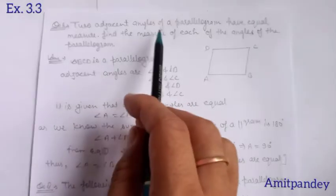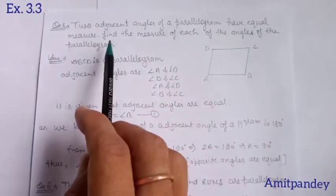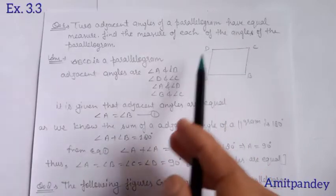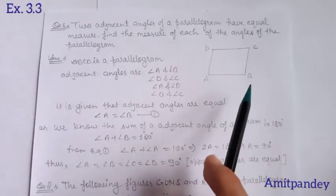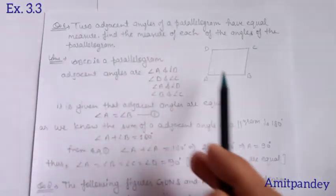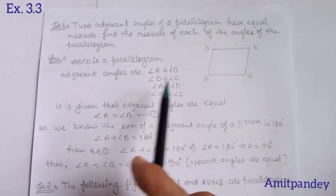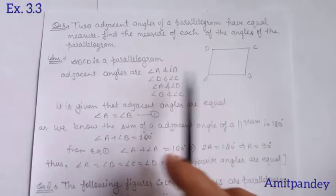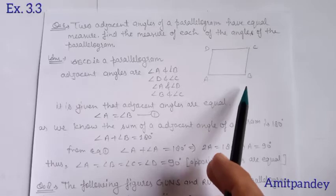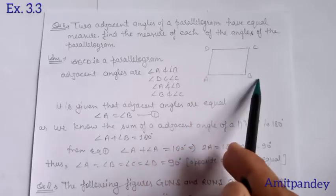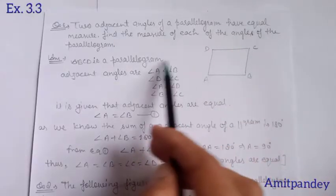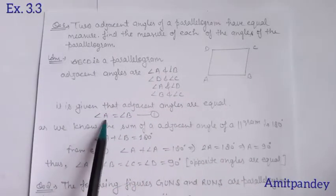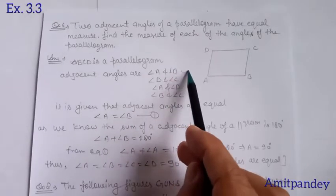Question number 6: Two adjacent angles of a parallelogram have equal measure. Find the measure of each of the angles of the parallelogram. ABCD is the parallelogram I have drawn. It says adjacent angles are equal, so angle A is equal to angle B — as given in the question, any two adjacent angles are equal. Adjacent of A is B or D, so we can take any one. We write angle A equals angle B.